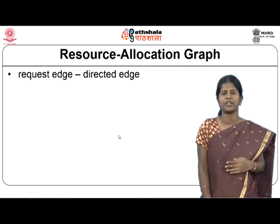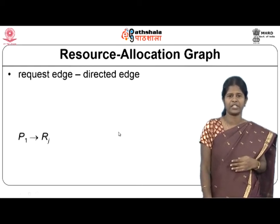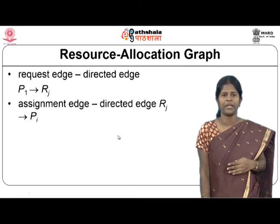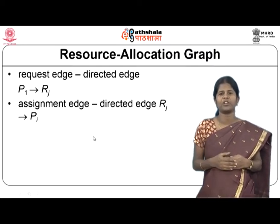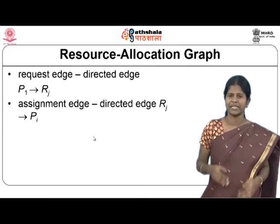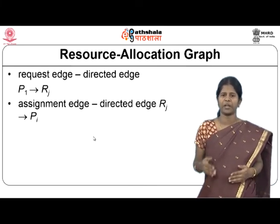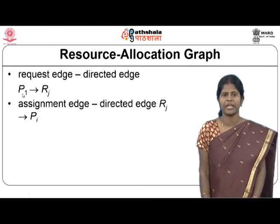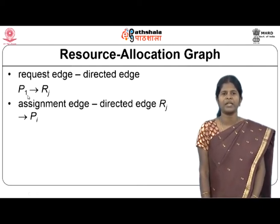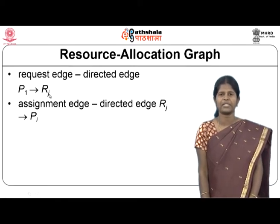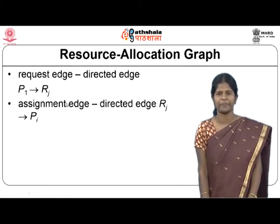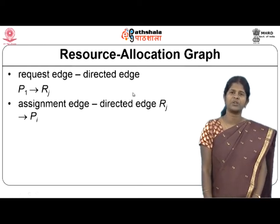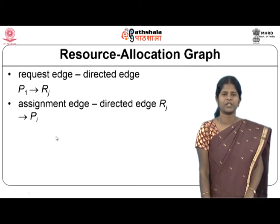The edges in a resource allocation graph are of two types. A request edge is a directed edge from process Pi to resource Rj, indicating that Pi is requesting an instance of Rj. An assignment edge is a directed edge from Rj to Pi, indicating that an instance of Rj has been assigned to Pi.